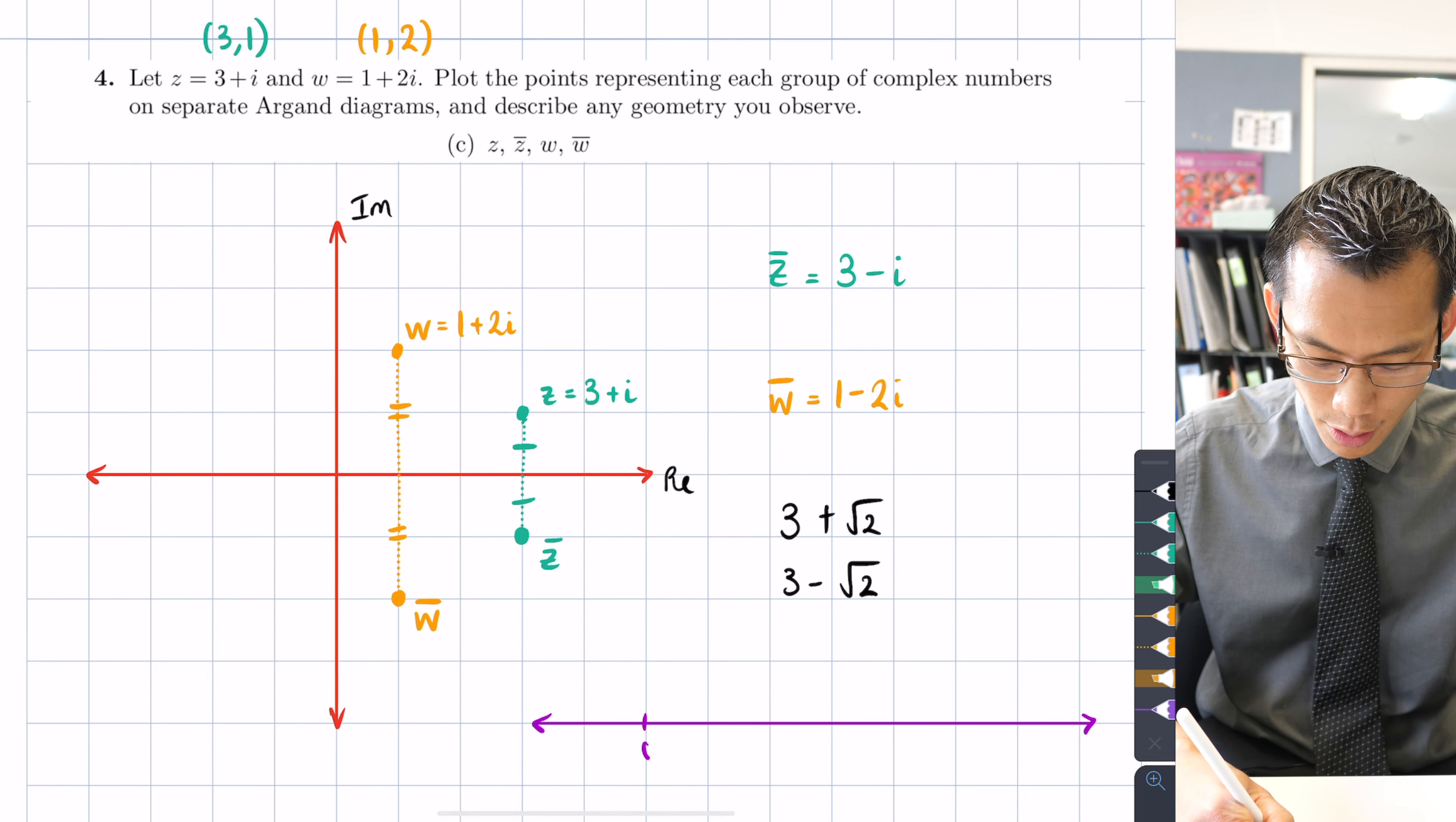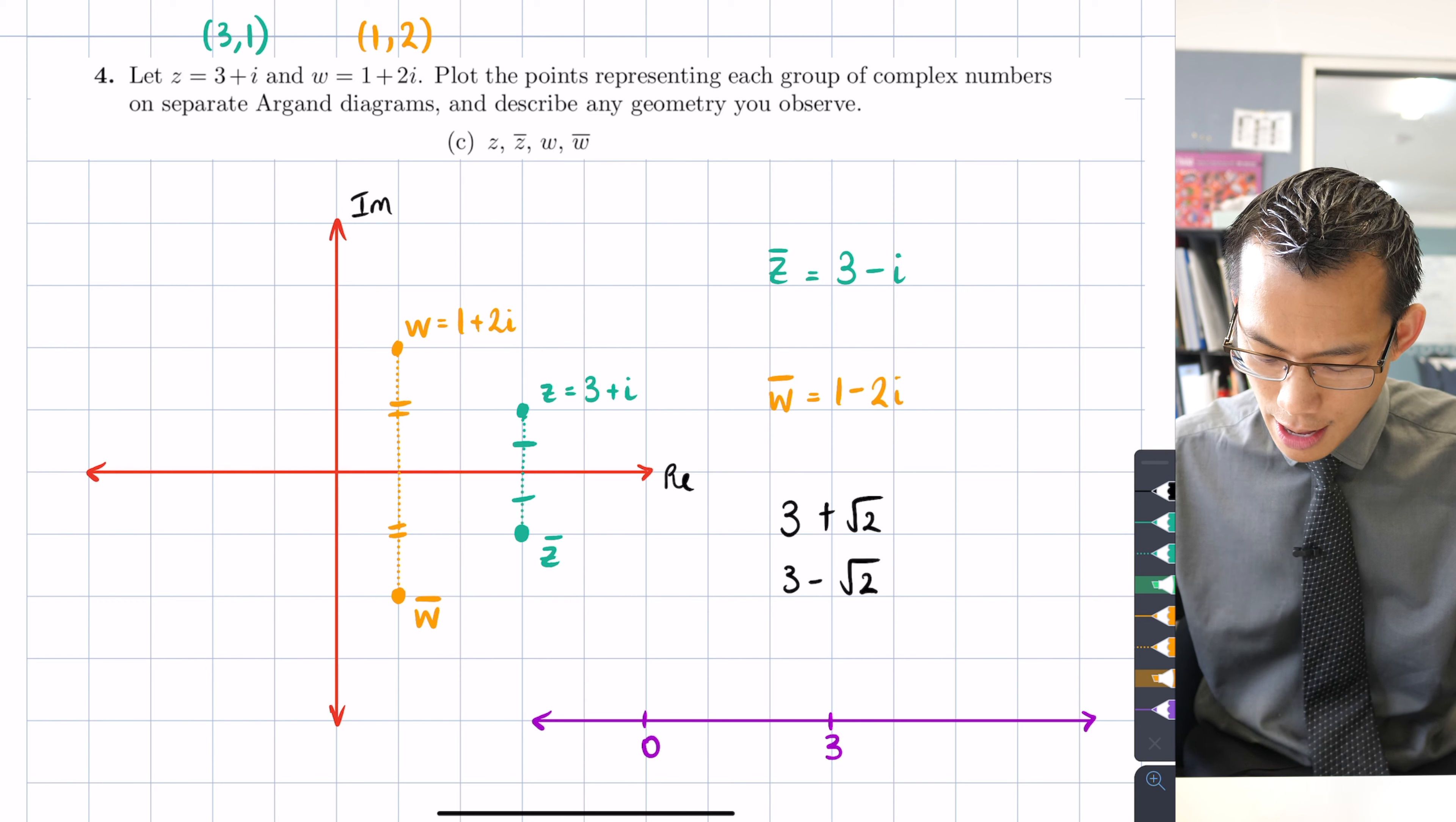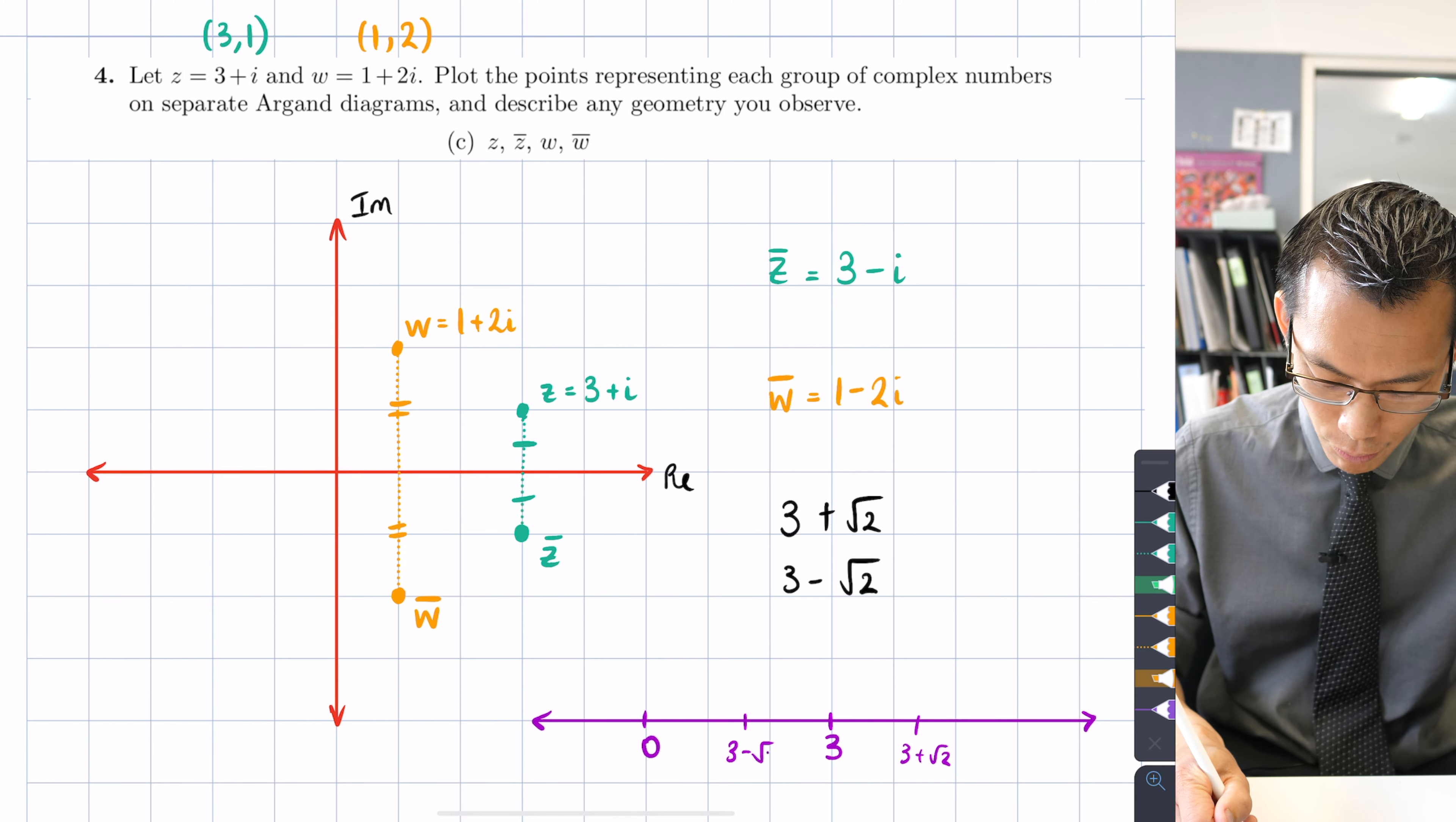You're actually going to get both of these conjugates on either side of 3. Root 2 is about 1.4. So if I were to place 3 + √2, I imagine it would be on the scale I've used somewhere around there. That'd be 3 + √2 and then 3 - √2 is going to be on the other side. I guess 3 take away 1.4-ish is about 1.6, so that's why you're going to be picturing it somewhere around there, 3 - √2.